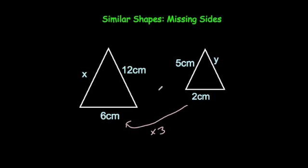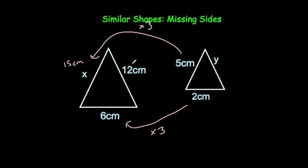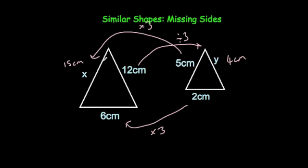That means to get from 5 to X, you're going to times by 3 as well. 5 times 3 is equal to 15, so X would be 15 centimetres. To get from 12 to Y, we're going to divide by 3. 12 divided by 3 is equal to 4 centimetres. Because it's been enlarged by scale factor 3, all the sides in this one are 3 times larger than all the sides in this one.